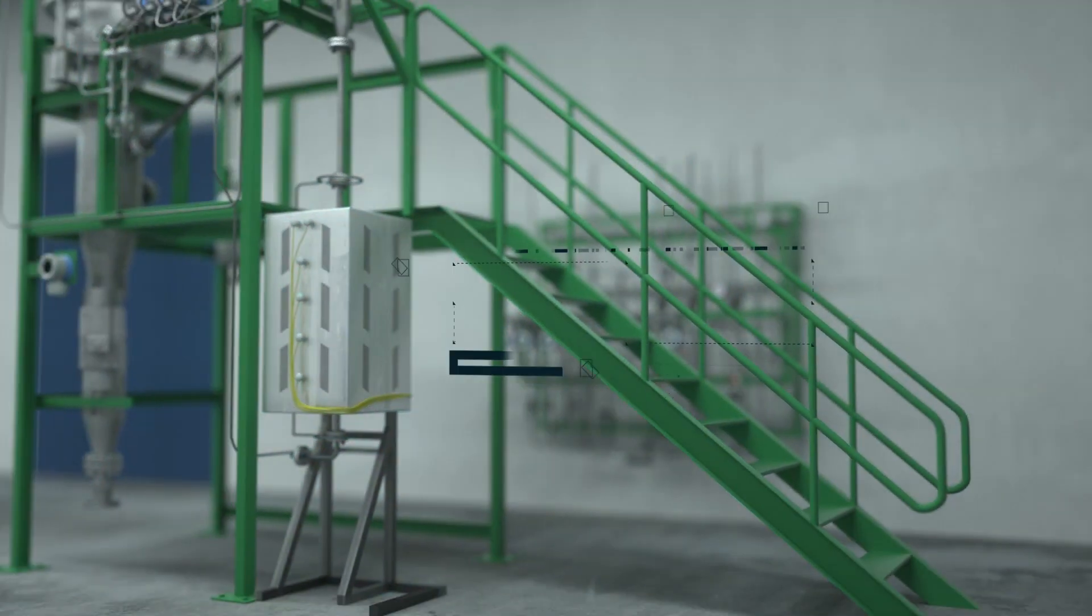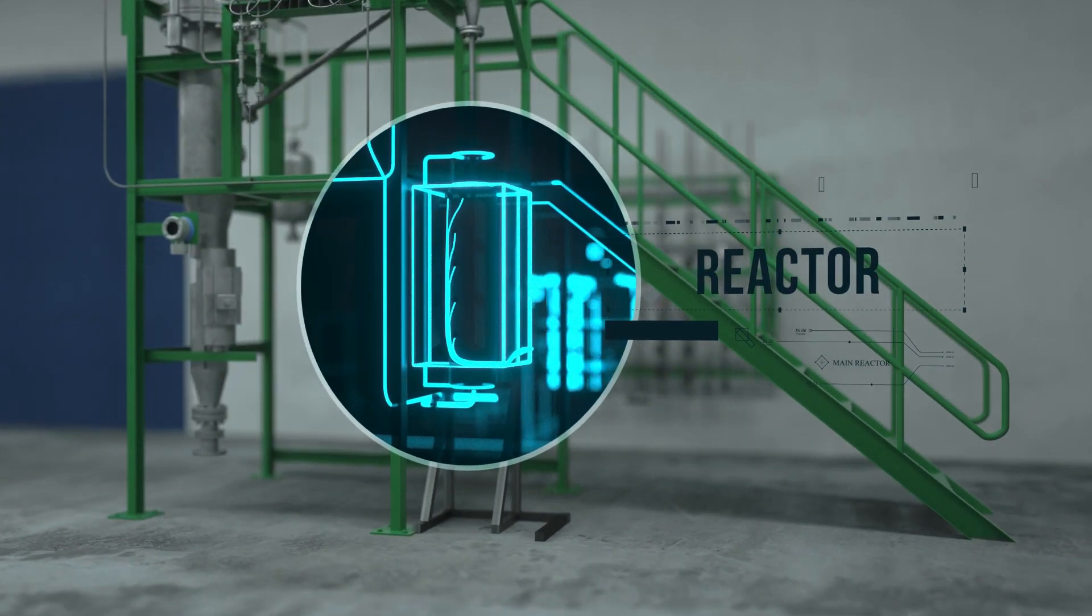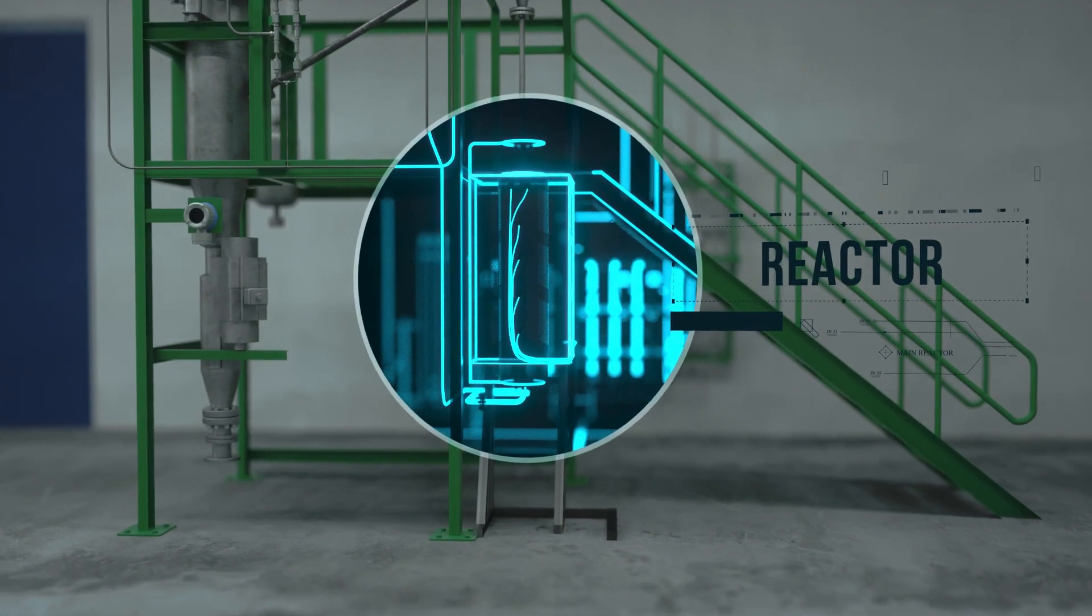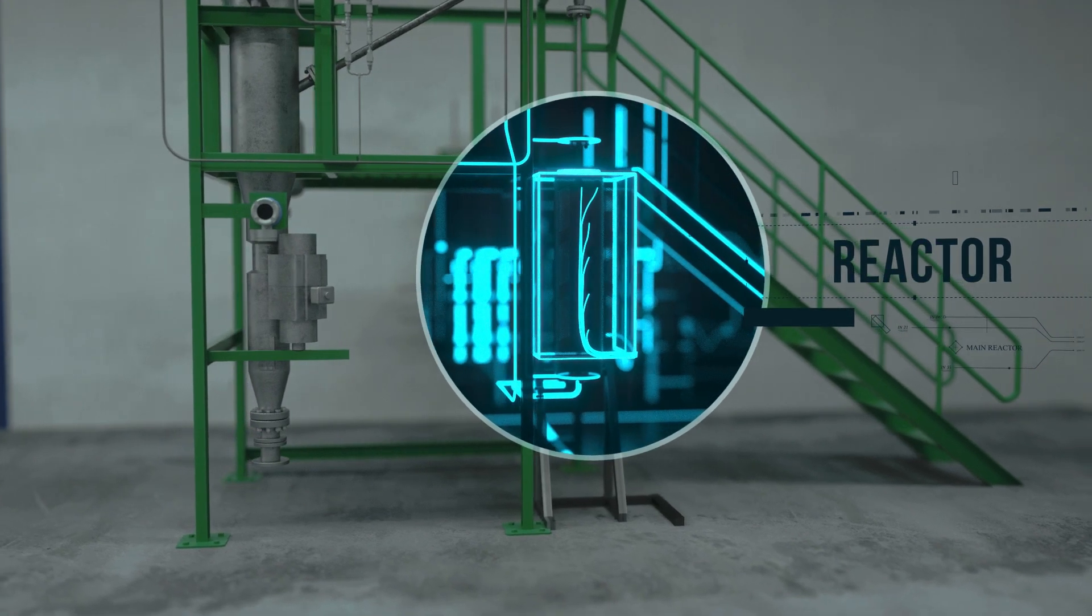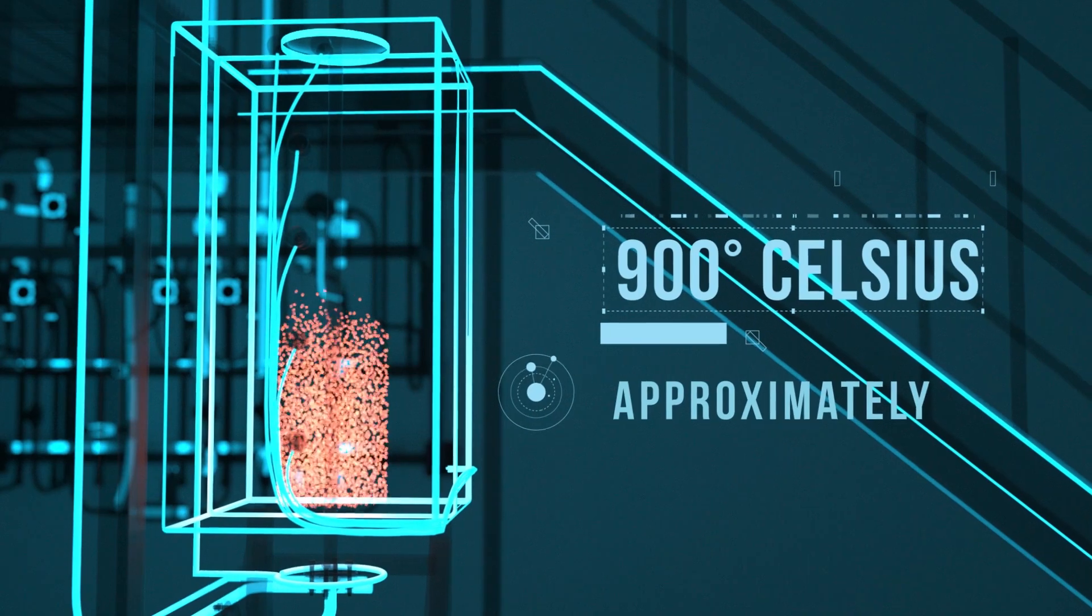The Hazer Plant is based on a reactor called the fluidized bed reactor where solids and gases can freely mix to enable the efficient conversion of natural gas into hydrogen and graphite. The reactor is heated to approximately 900 degrees Celsius.